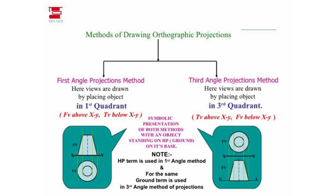Now look at this XY line. The XY line shows the front view, top view, right side, and left side.